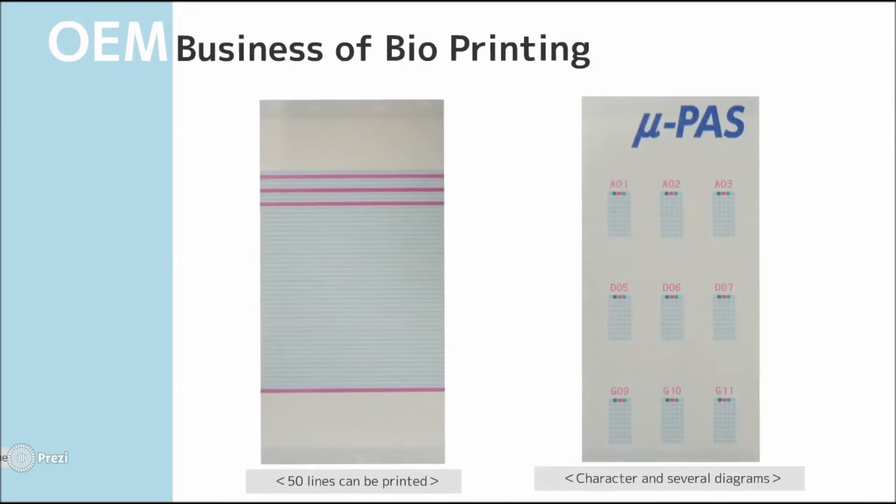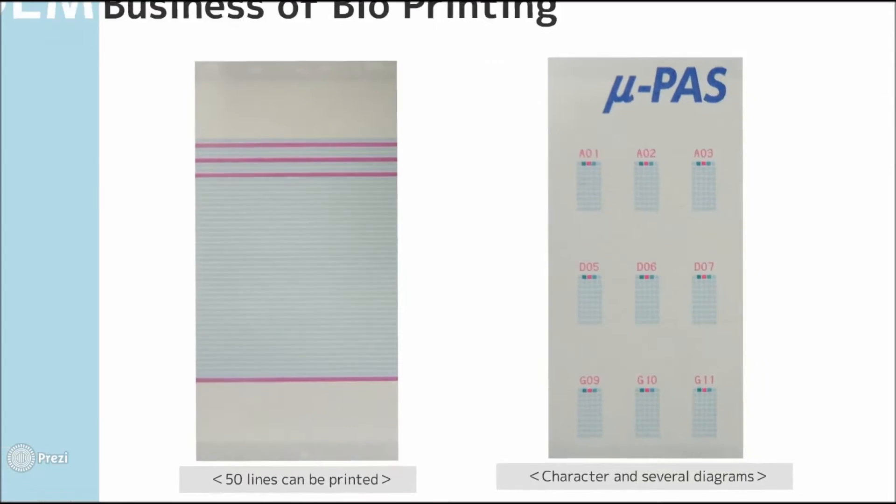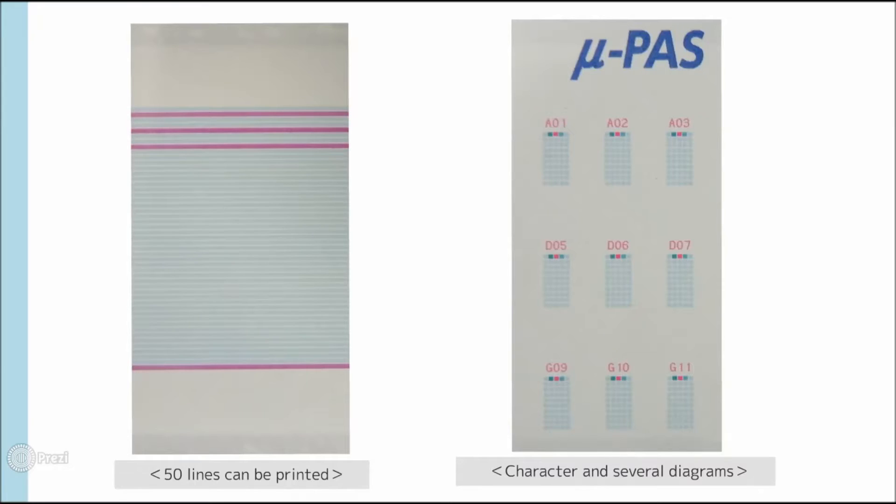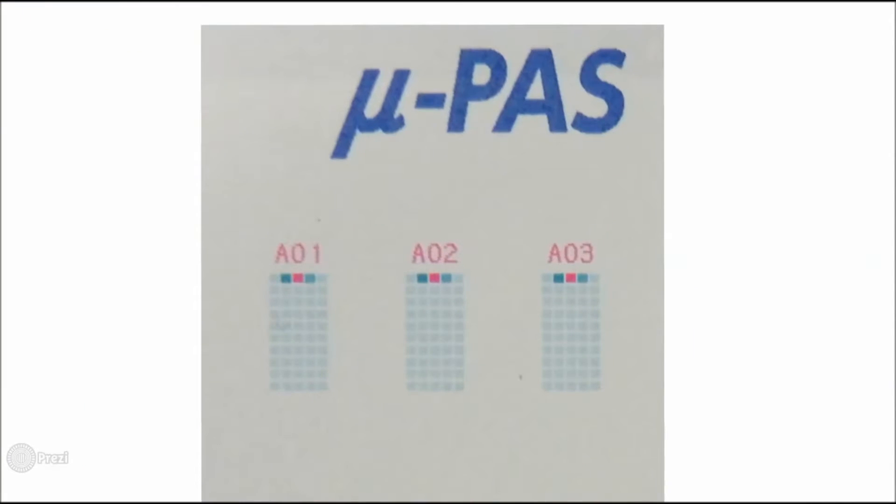TBA has OEM business bioprinting for several other companies as well. On the left are 50 lines of DNA printed out by TBA. TBA can also print letters and words and diagrams of DNA like the product on the right.